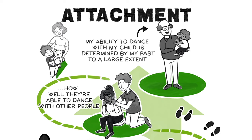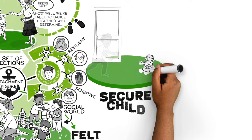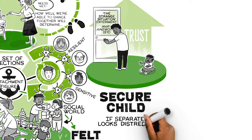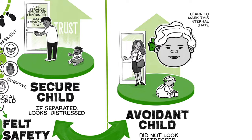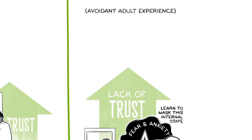Infants who become securely attached have parents who are sensitive to their needs. But here's the key thing: if they're separated, secure babies look distressed. But avoidant babies did not look distressed — they learn to mask this internal state of fear and anxiety. And that's the origins of the avoidant adult's experience.